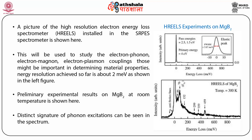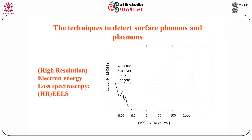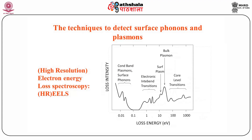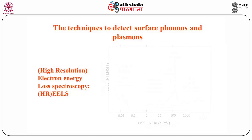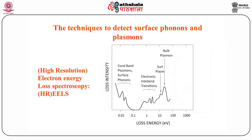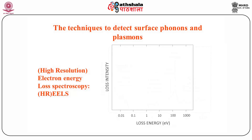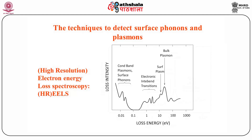This slide talks about the techniques to detect surface phonons and plasmons. The spectrum shown has loss intensity on one axis and loss energy in electron volts on the other. One can see the surface phonon, coordinate bond plasmons, and core level transitions, etc.